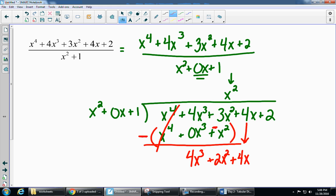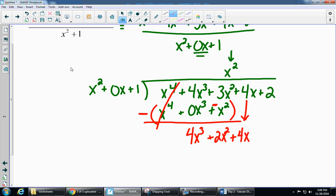So now what times x squared gives me 4x to the third? I'm going to get 4x. As soon as you get a top piece, you're going to multiply. 4x times x squared is 4x to the third. 4x times 0x is 0x squared. And 4x times 1 is 4x.